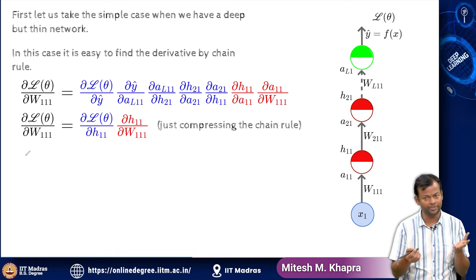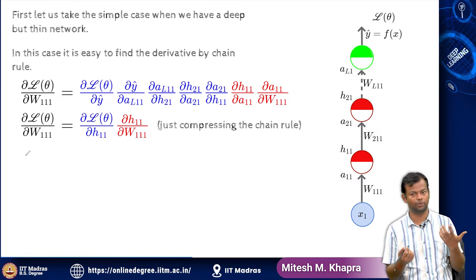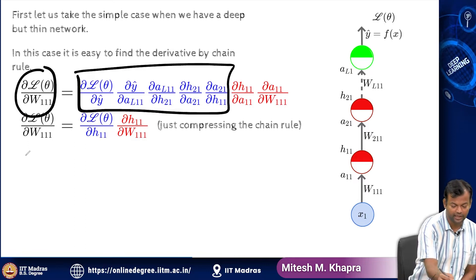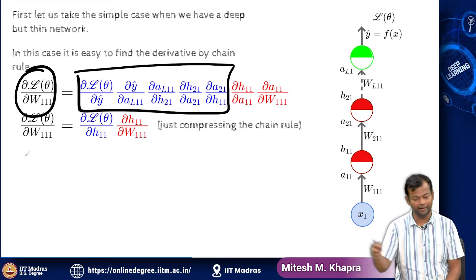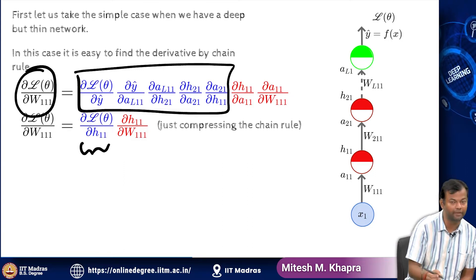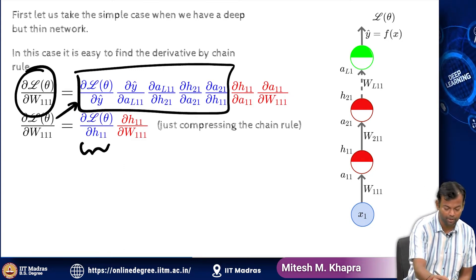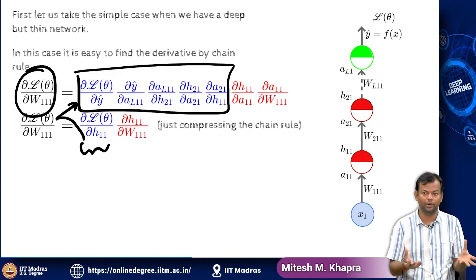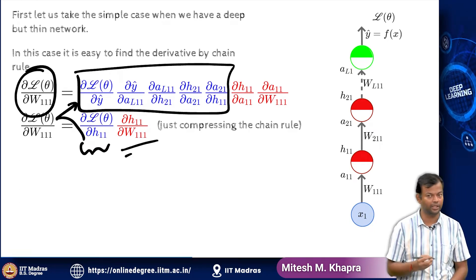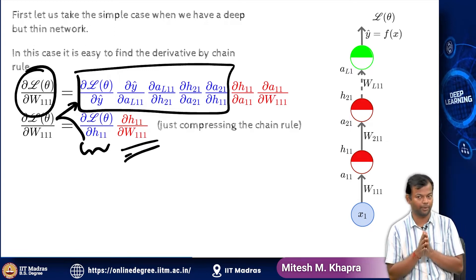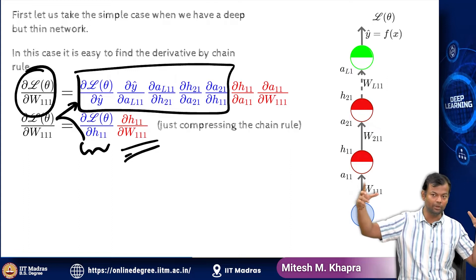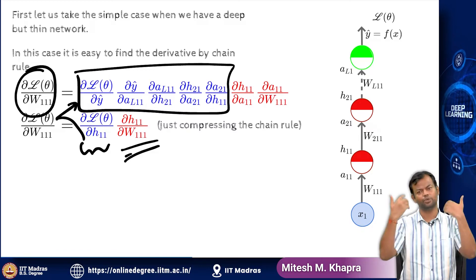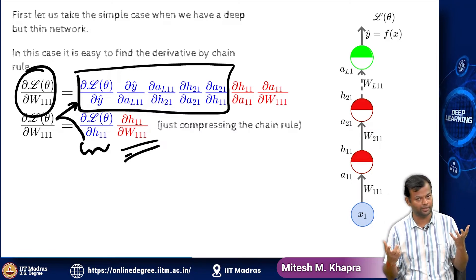This compressed form is just to build the intuition that somehow if I know all of this, then to compute this guy I do not need to compute all of these again. Suppose I have already computed this — which corresponds to that entire box here. So I can just reuse that. I do not need to compute the whole of it again; I just need to compute this red quantity. So that is the idea we are going to use in back propagation: we will have these long chains, and that would make the task daunting, but then we will argue that some portions of this chain we have already computed and we are just going to reuse them. So it is not as daunting as it seems.